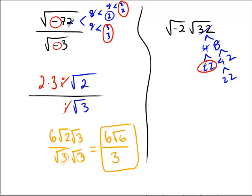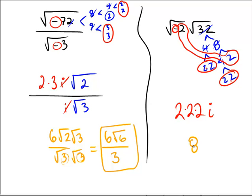2, 2, 2. In addition to the negative sign, which gives me an i. So, the answer to this problem is 2 times 2 is 4 times 2 is 8. And also the imaginary unit of i for 8i.